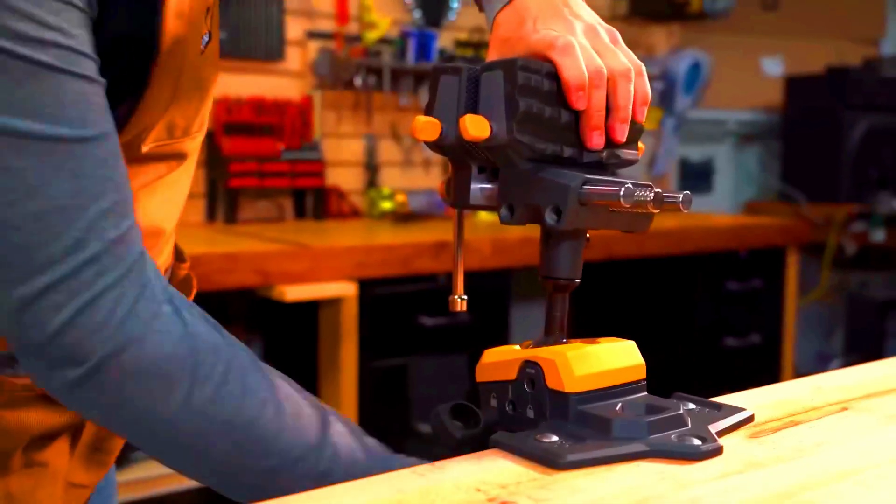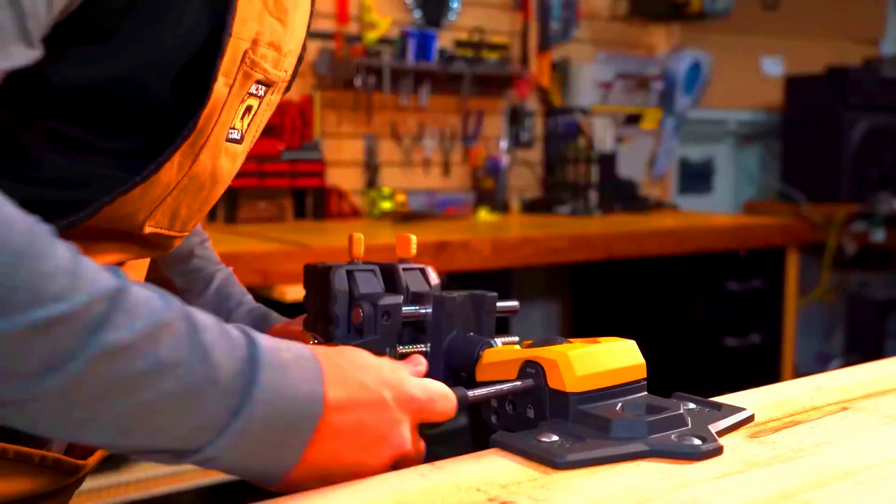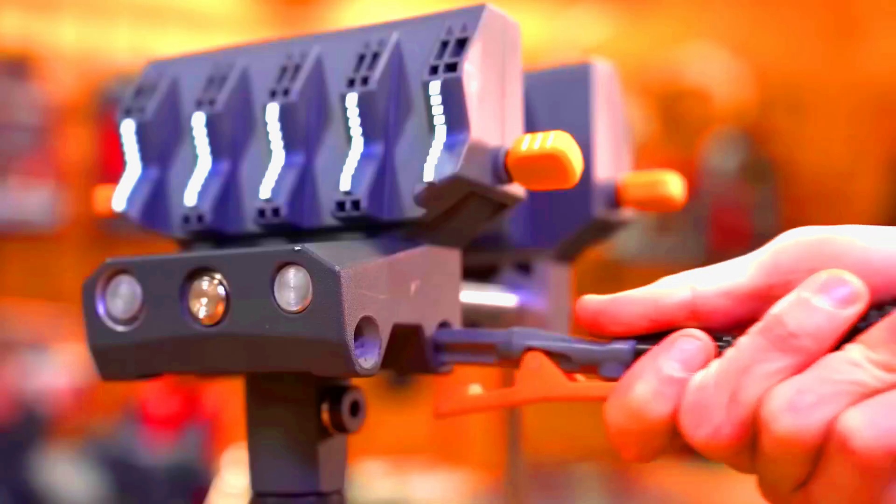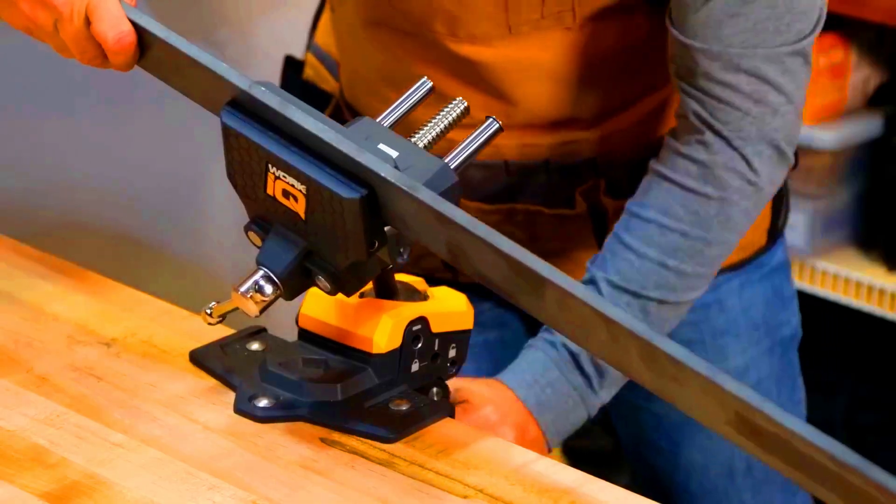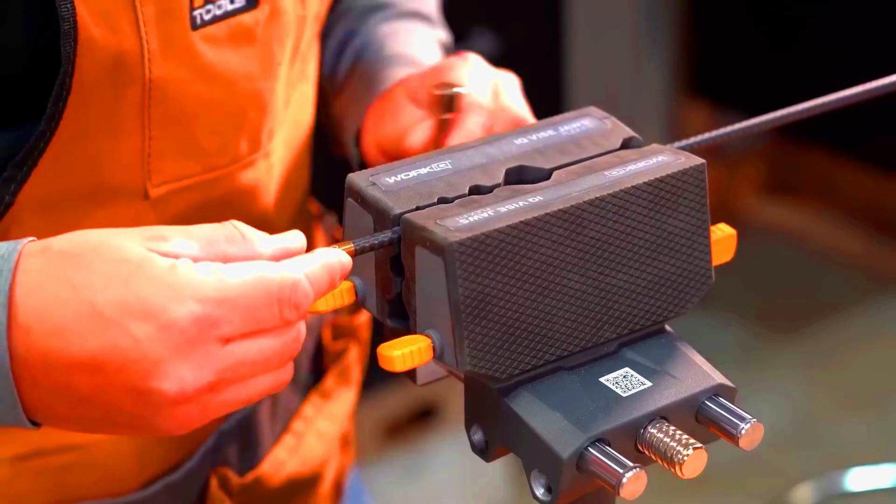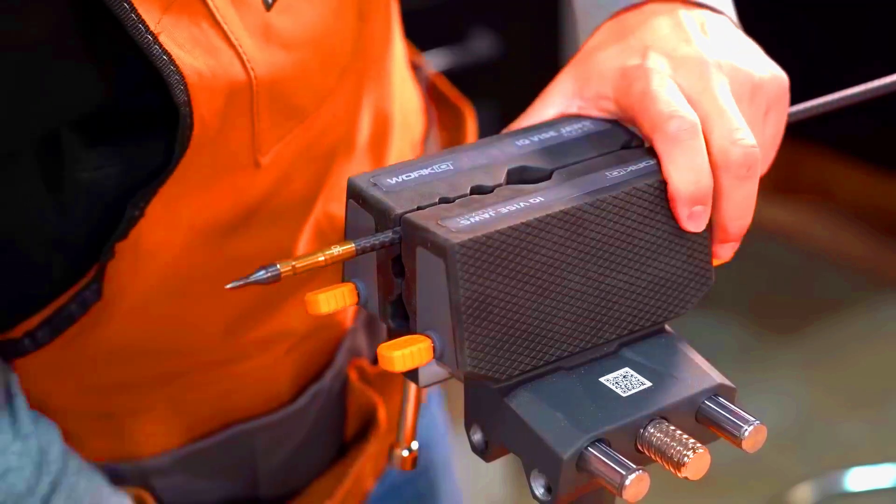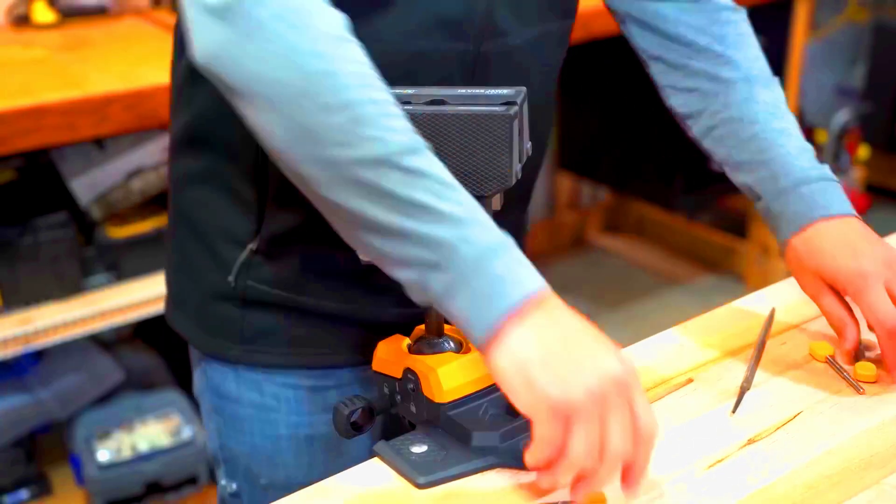This allows you to add lights, a magnifying glass, or even a smartphone to your workspace. The jaws feature a rubberized surface with grooves, making them suitable for gripping pipes as well. The IQ Vice is available for $280.